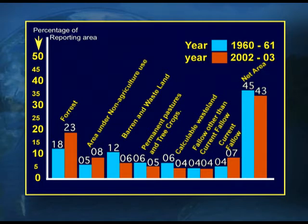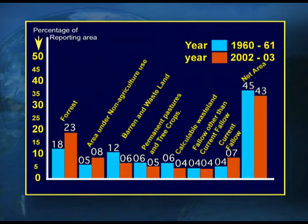You can look at the visual. If you see the permanent pasture land, that has reduced in the year 2002 in comparison to the year 1960-61. And the culturable wasteland has also reduced. Children, you must think about what can be the reason for the decrease in the percentage of land under wasteland. That means we are taking up all the efforts to improve the barren lands and bring that land under agriculture.